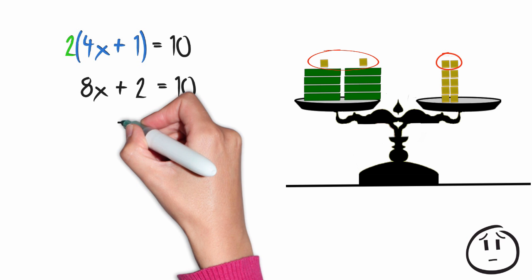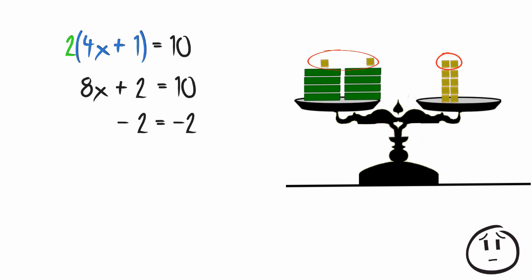To do that I'm going to subtract 2 from both sides. Remember whatever we do to one side of the equation we need to do to the other side. Otherwise the equation will not stay balanced.